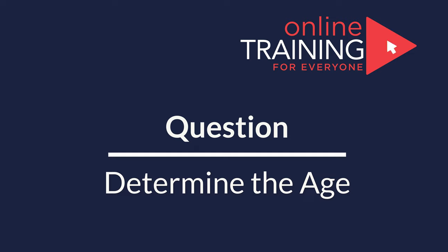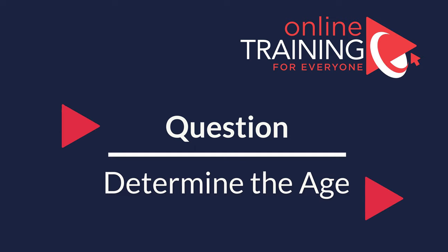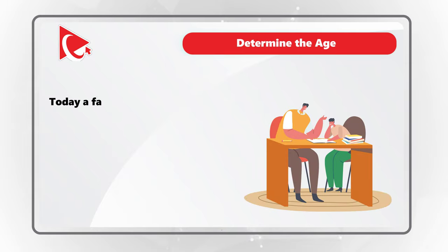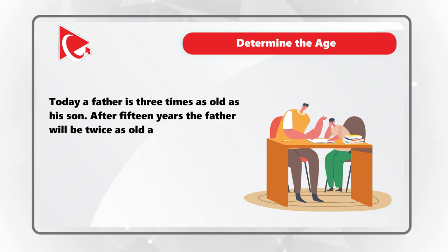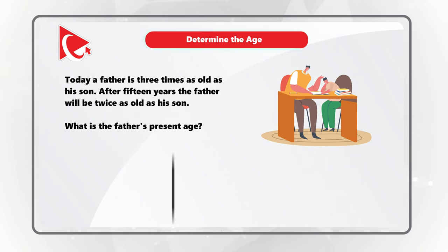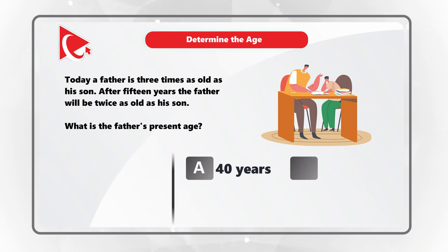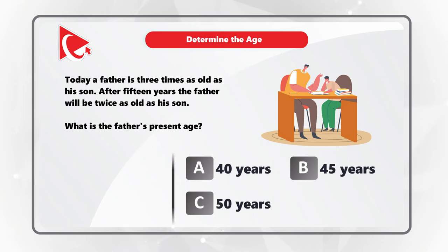Here is the frequent test problem where you need to determine the age of family members. Today a father is three times as old as his son. After 15 years the father will be twice as old as his son. What is the father's present age? You have four choices: A: 40 years, B: 45 years, C: 50 years, D: 55 years.